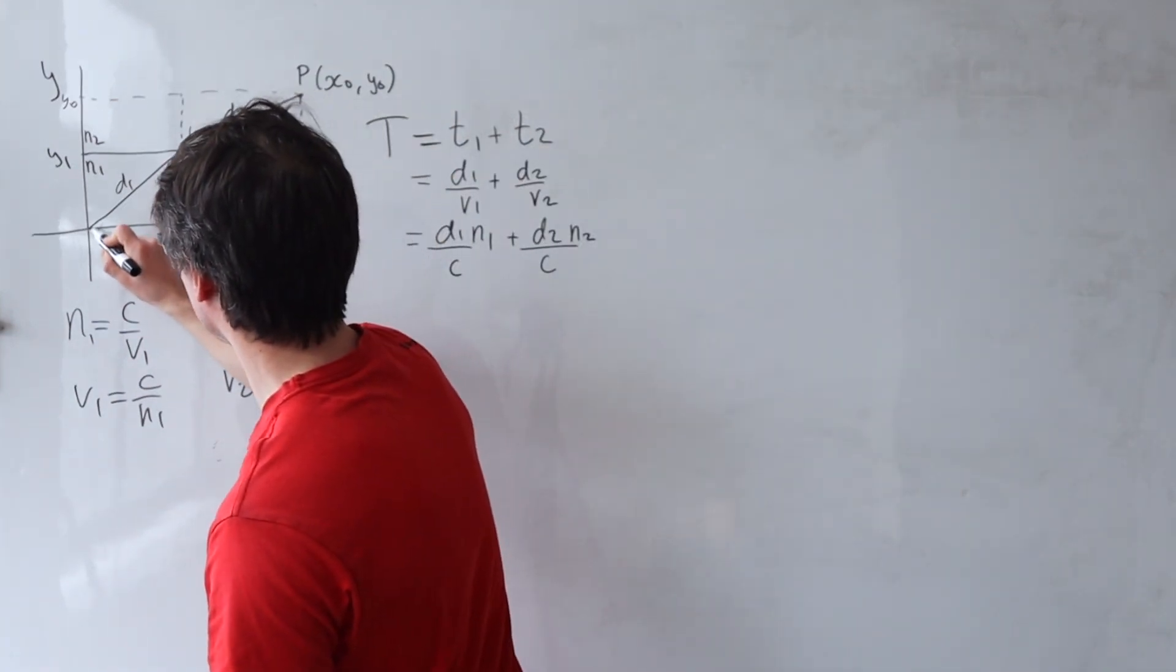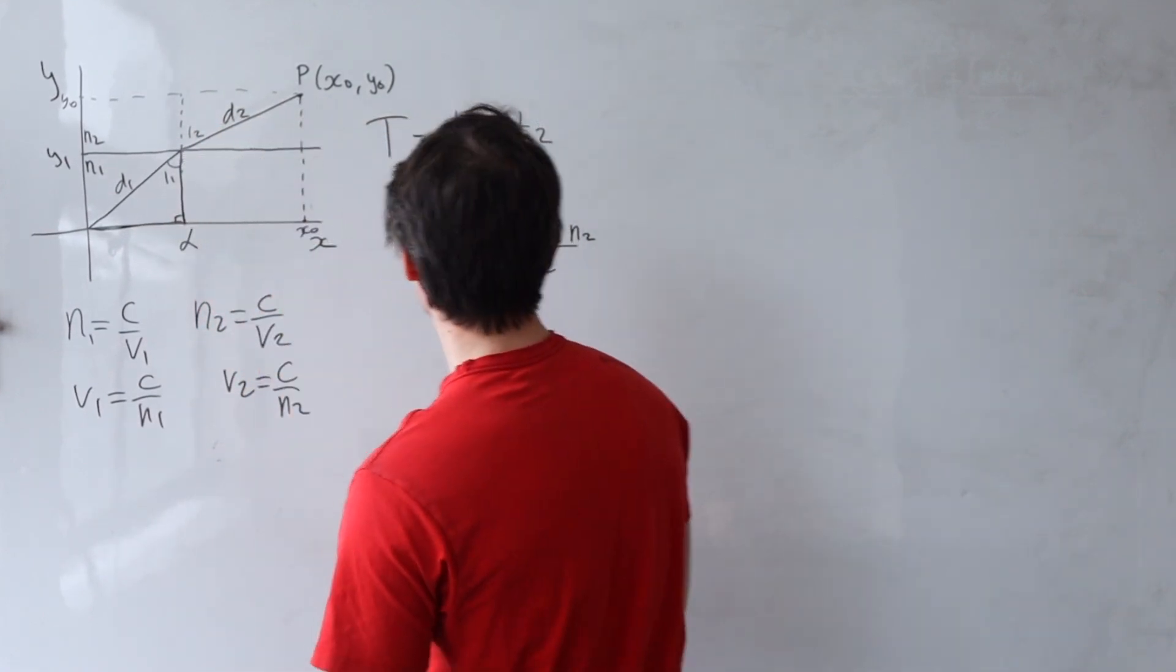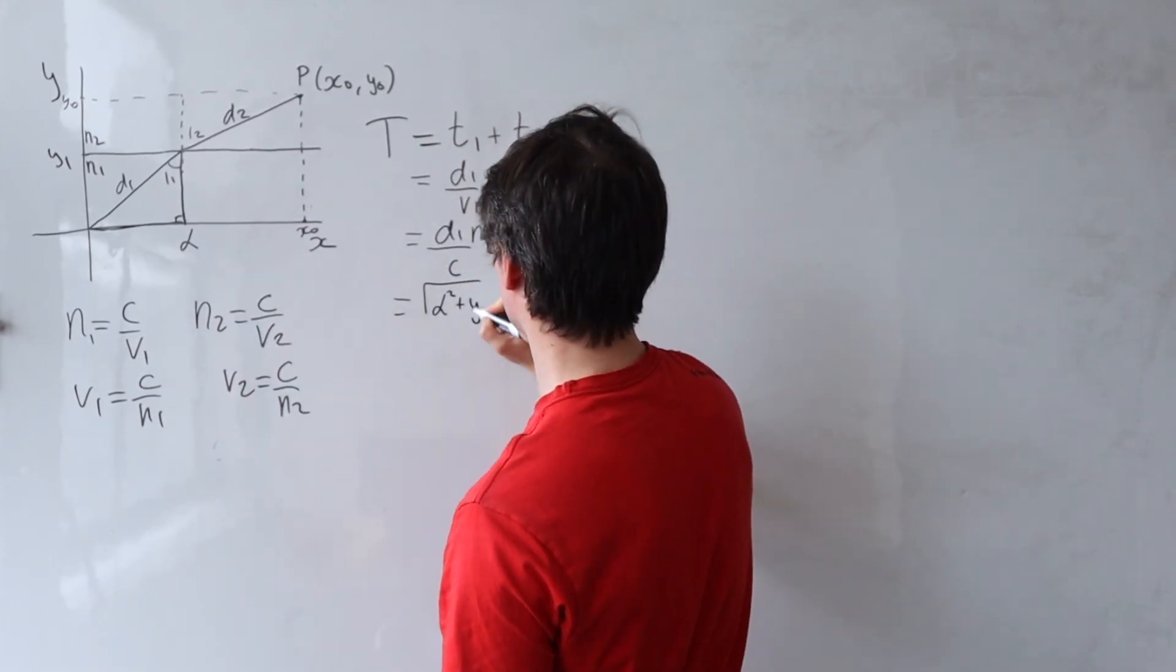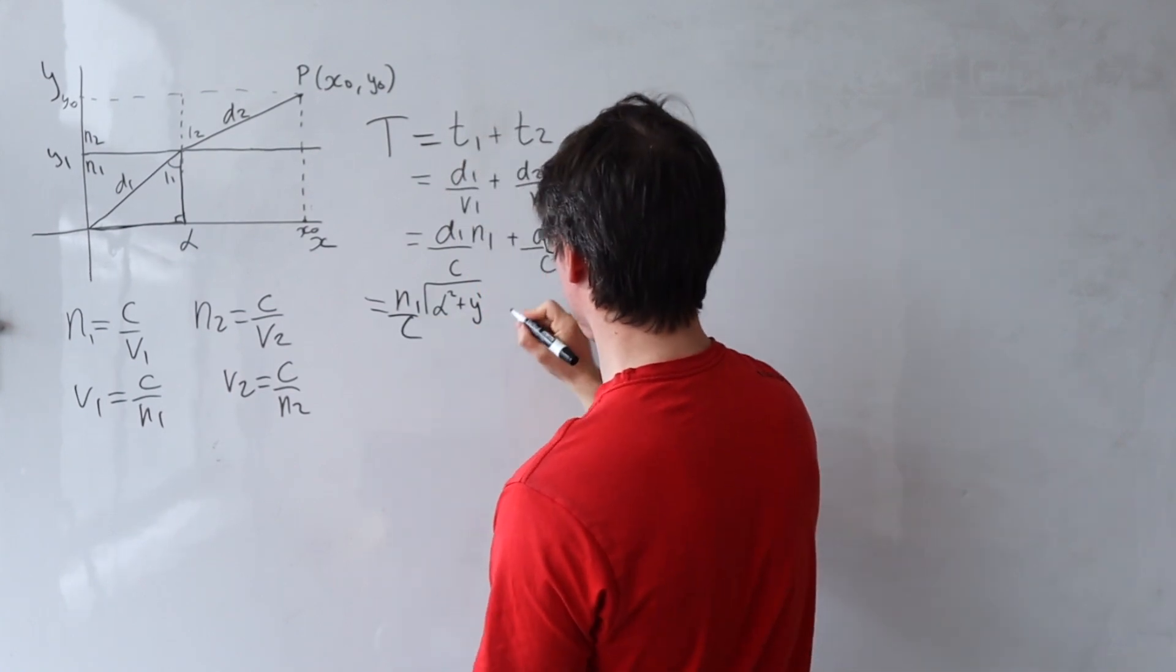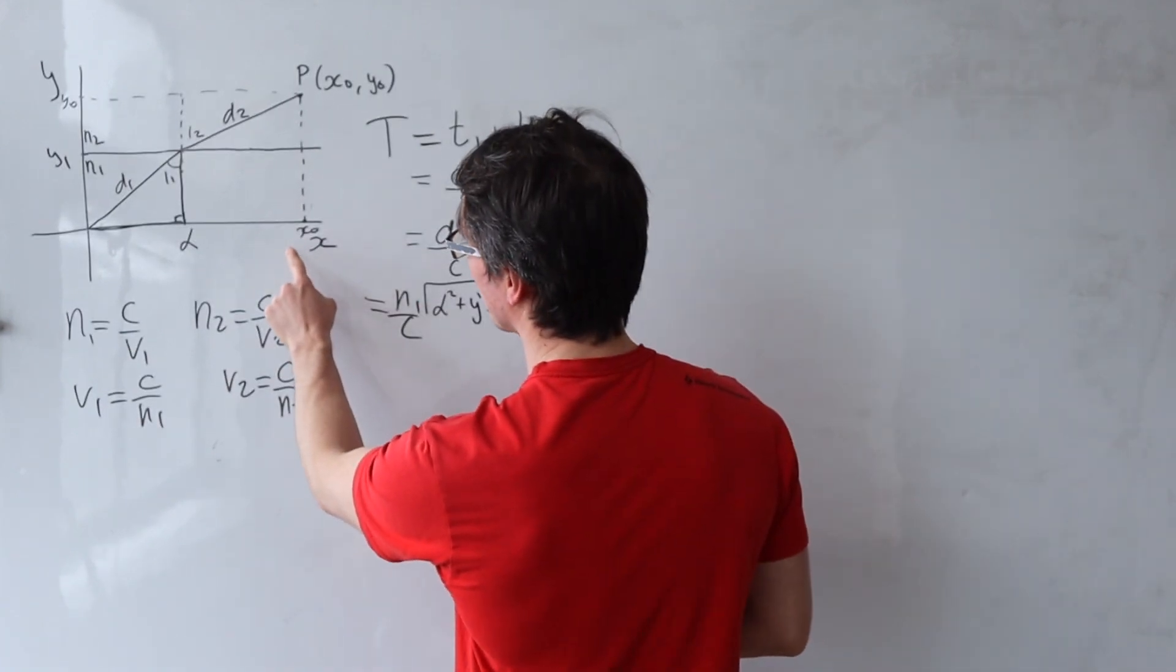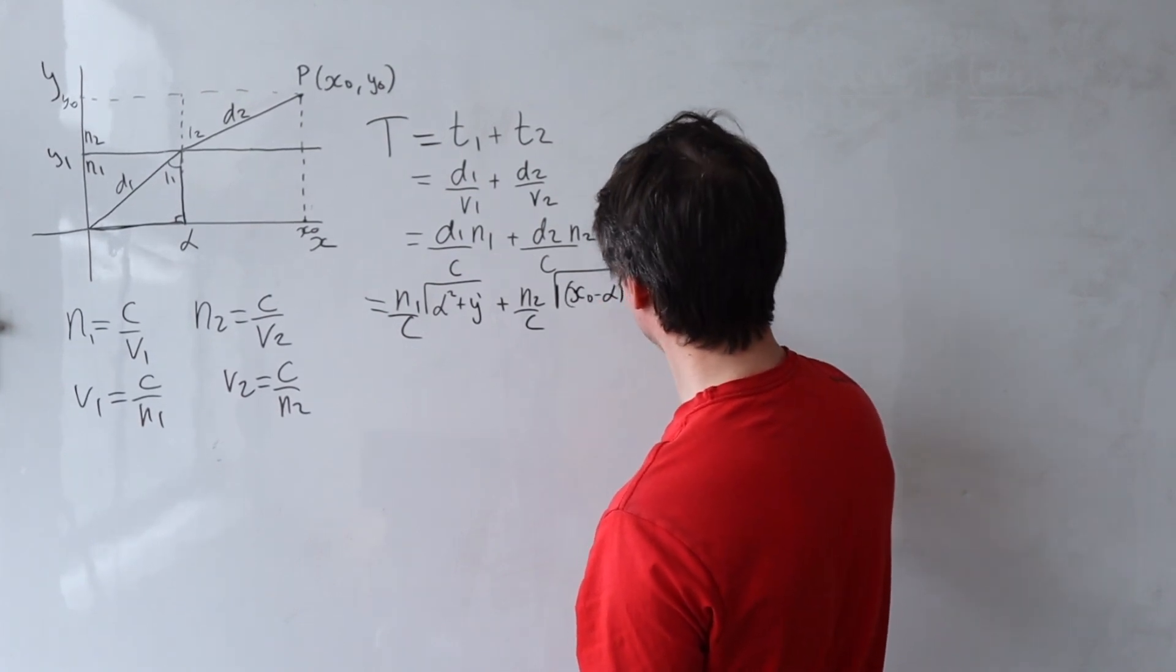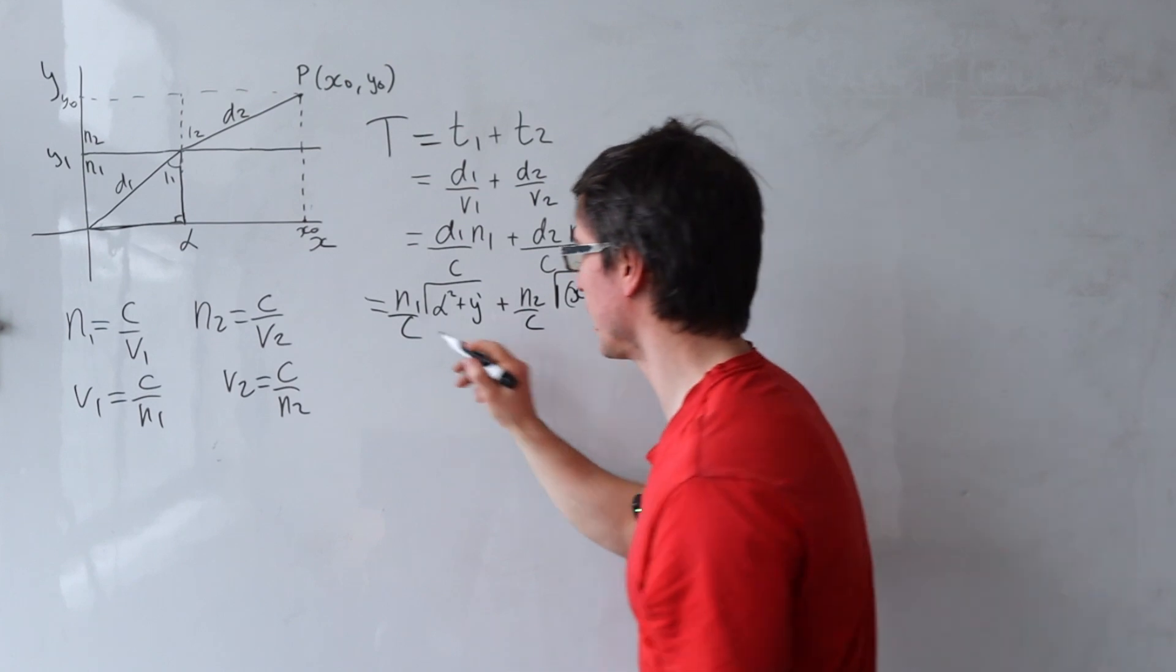So the distance d1 we can actually find that using Pythagoras because this angle here is going to be 90 because that's this here just the normal. So we can say that d1 is actually just going to be given by the square root of alpha squared plus y1 squared which is just this distance over here. Okay let's bring the factor of n1 over c here and then plus n2 over c d2. Let's be a bit careful with the coordinates.